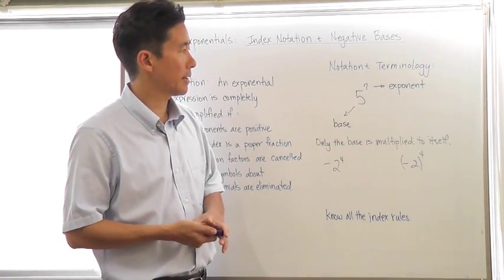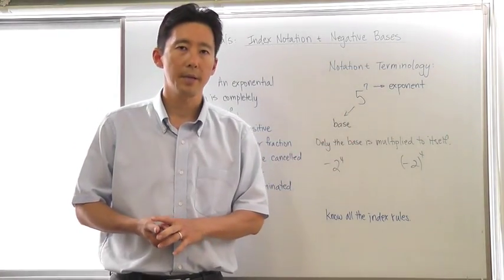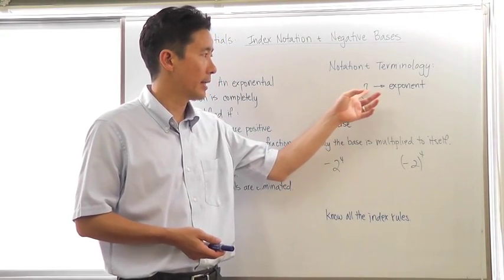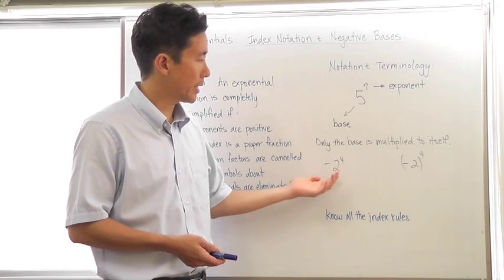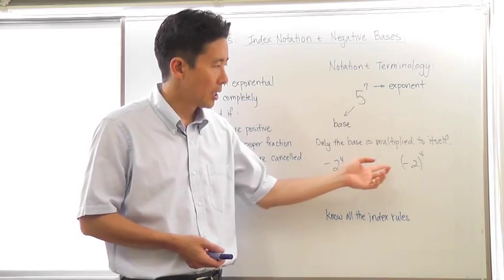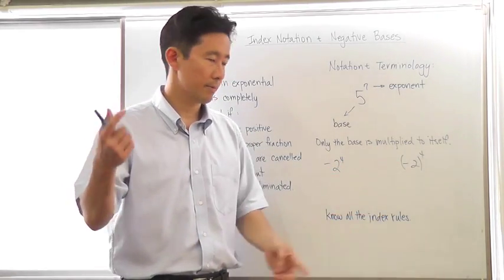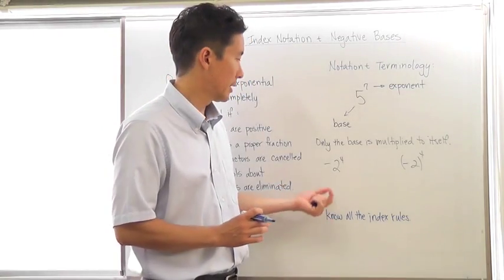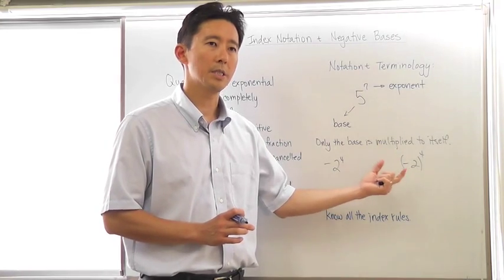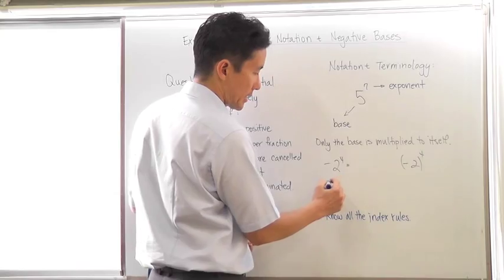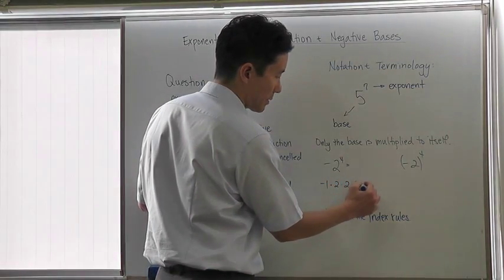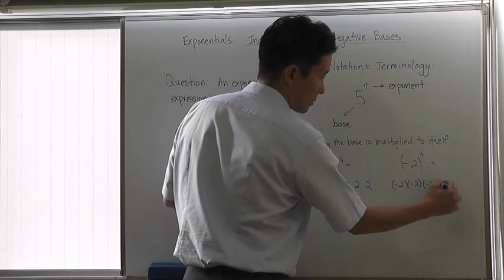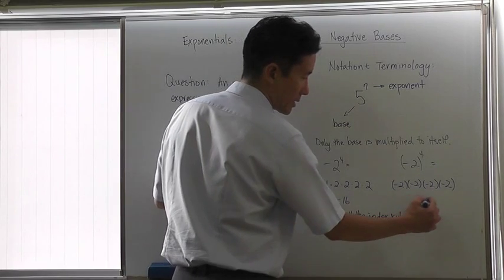If you have something like five to the seven, then five is going to be considered the base and seven is going to be considered the exponent. The key to remember is that only the base is multiplied to itself the number of times indicated by the exponent. For example, take a look at these two: negative two to the fourth, and negative two in brackets raised to the fourth. This is 'negative two to the fourth,' but this is 'negative two quantity raised to the fourth.' The first is negative one times two to the fourth, giving negative 16, whereas the bracketed version gives positive 16.